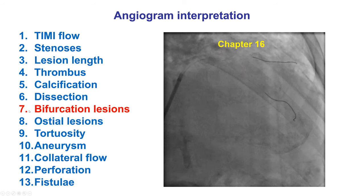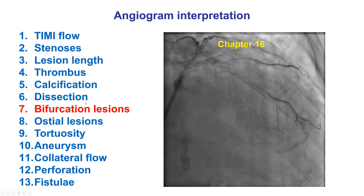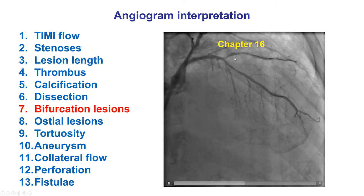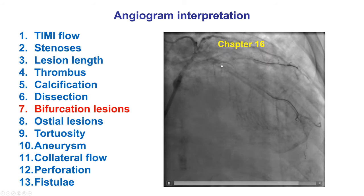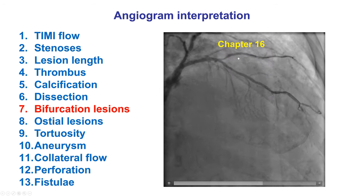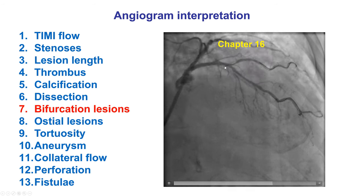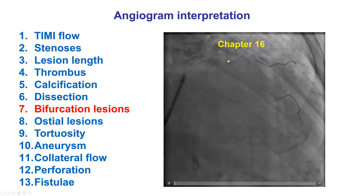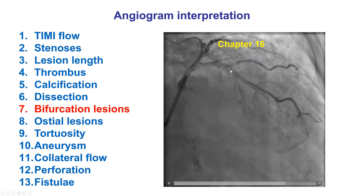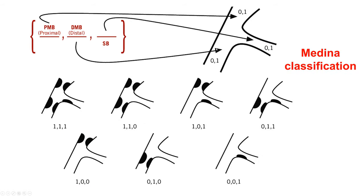Number seven of the characteristics to look for is the presence of bifurcation lesions, which are lesions where the coronary arteries split into branches. This is an example of an LAD and diagonal bifurcation lesion. Bifurcations are usually assessed using the Medina classification, discussed in detail in the videos from Chapter 16.